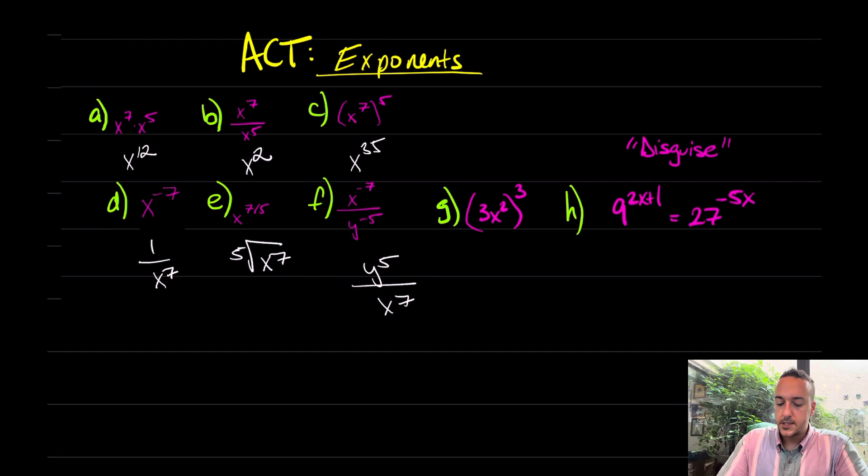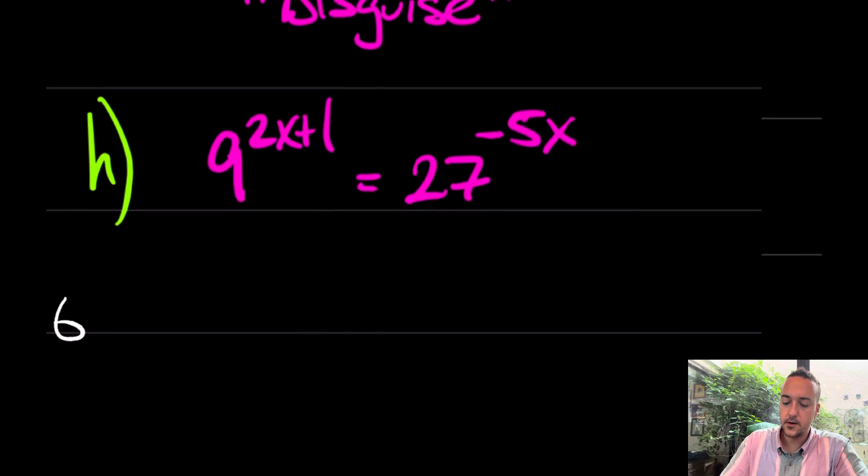Take a look at part G. Part G is one that my students miss all the time, but it's three to the third. Three to the third is 27, and right here, power of a power x to the sixth. That's good for all of my easy ones.